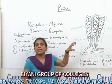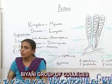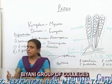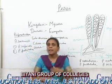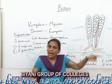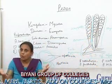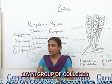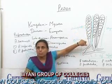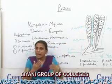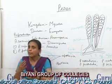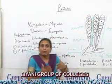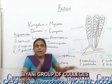This dikaryotic cell gives rise to many ascogenous hyphae, which later give rise to the ascus mother cell. The ascus mother cell gets modified into a club-shaped ascus. The diploid nucleus of the ascus divides mitotically and meiotically to give rise to eight ascospores, as seen in the diagram. These ascospores are released by rupture of the tip of the ascus with a hissing sound.